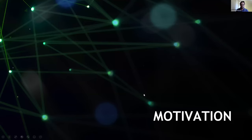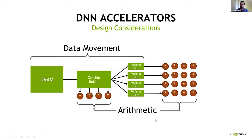Let's begin the main technical content with some motivating remarks. Why are we doing what we're doing, and why is everyone potentially interested in these tools? We're looking at the space of architectures of DNN accelerators. When an architect is designing a DNN accelerator, zooming out to the big picture, you're worried about two main things: data movement and arithmetic.